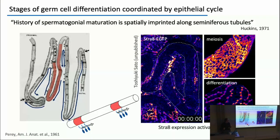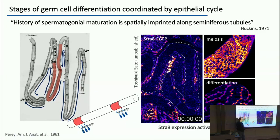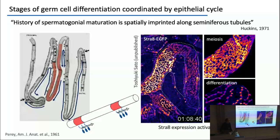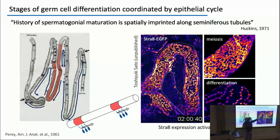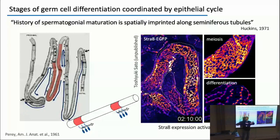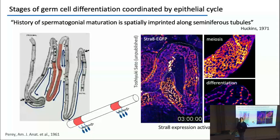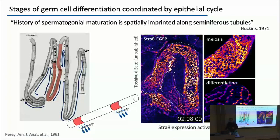Here's a movie generated by collaborator Toshiyuki Sato, driving GFP from Stra8, which is expressed in synchrony with the peak of retinoic acid signal. You'll see that wave move — there it goes around. You can also see some really giant syncytia entering into meiosis, and smaller syncytia undergoing differentiation. One of the projects we have in the lab is understanding the dynamics of this phase wave.